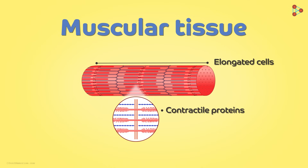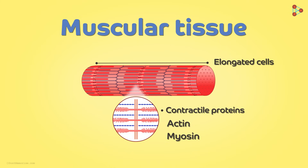The cells of this tissue are elongated and contain contractile proteins. When we say movement, it means the muscles themselves have to perform contraction and relaxation. For this, the cells have proteins like actin and myosin, which themselves contract or relax, thus enabling the muscles to do the same.